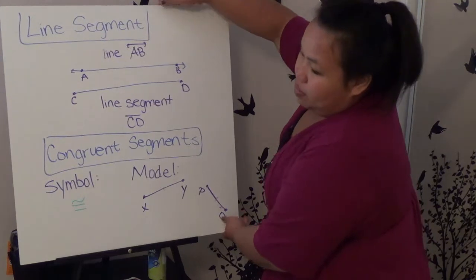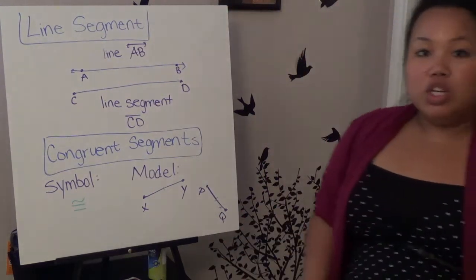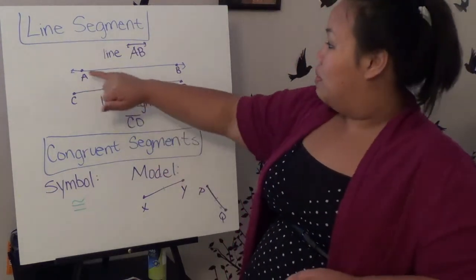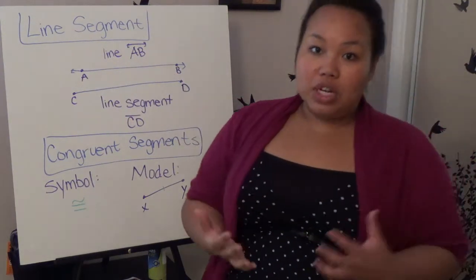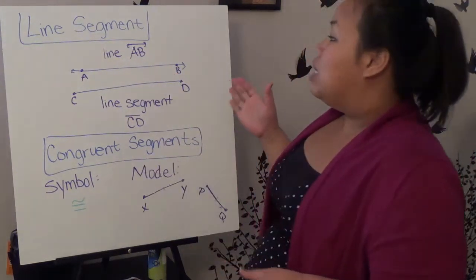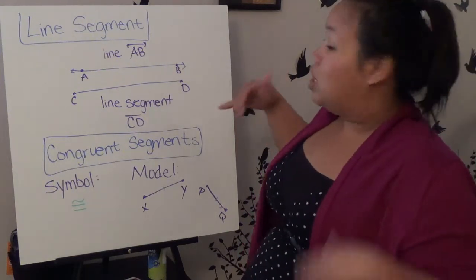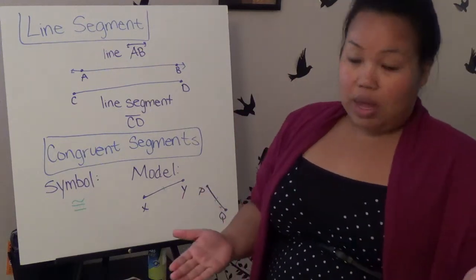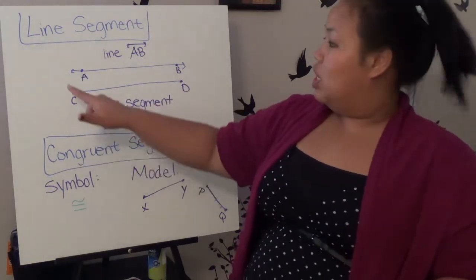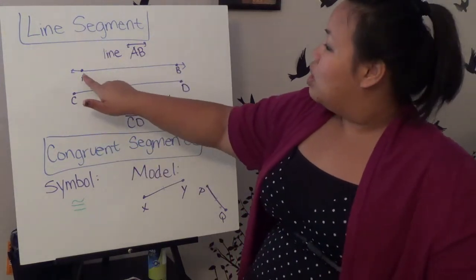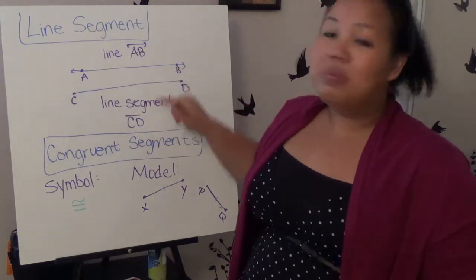The first part of linear measure is a line segment. So we went over what lines are, and lines are basically right here. It's the ones with the arrows, and if you remember the definition of the arrows, it just means that it can't be measured, because the arrows mean that they go on forever. So a line segment means that it stops. So this would be a line right here, but the distance between A and B, that would be a line segment.